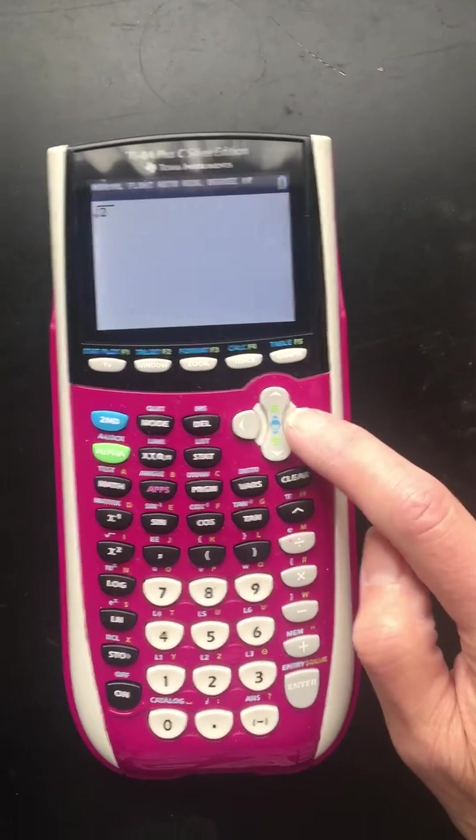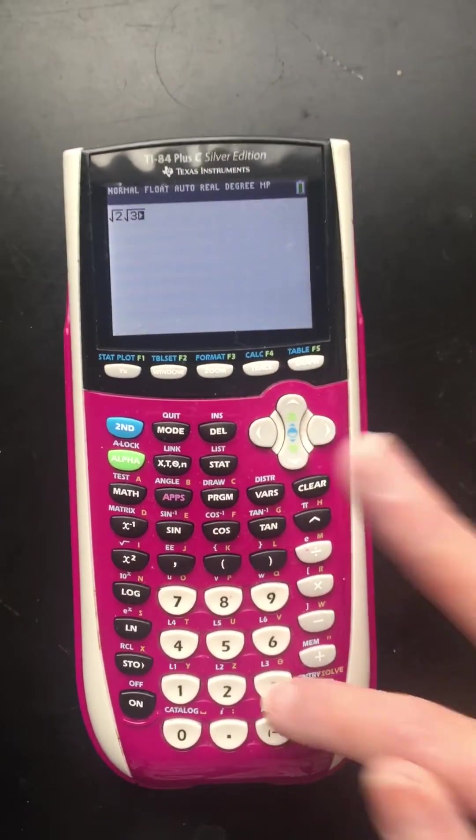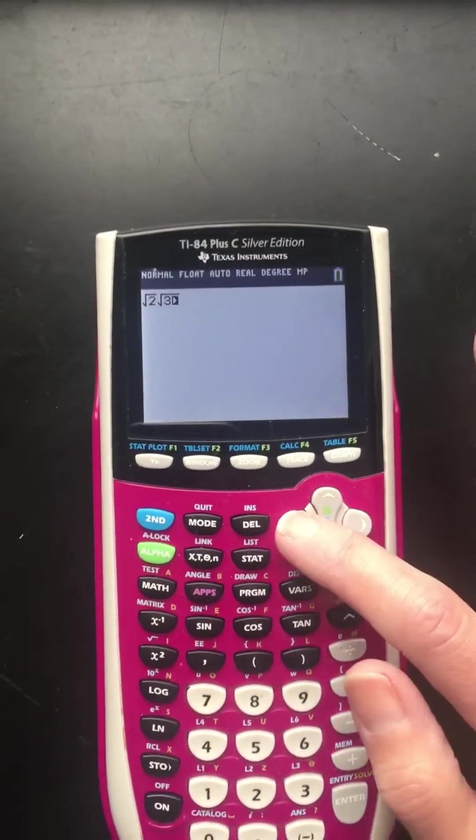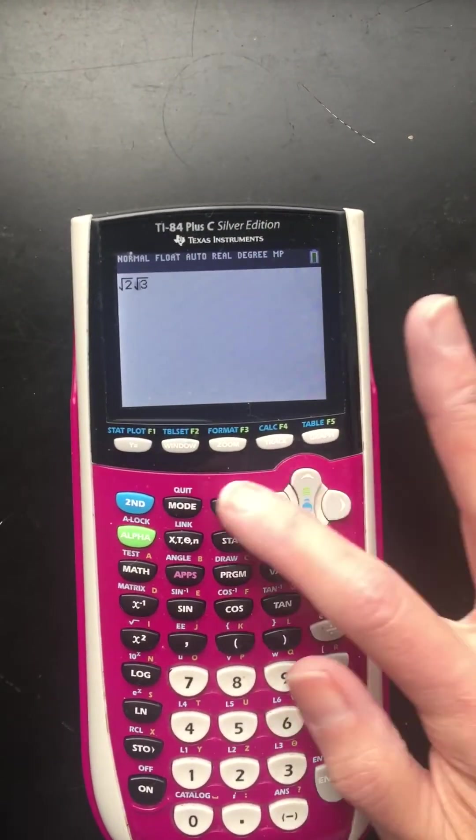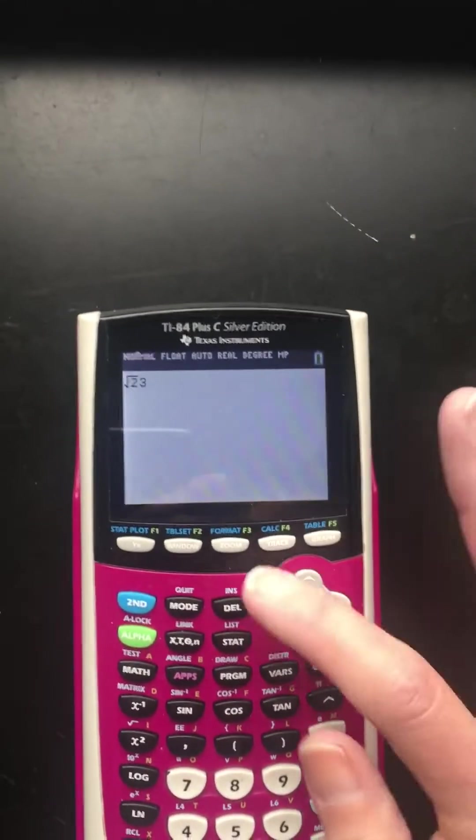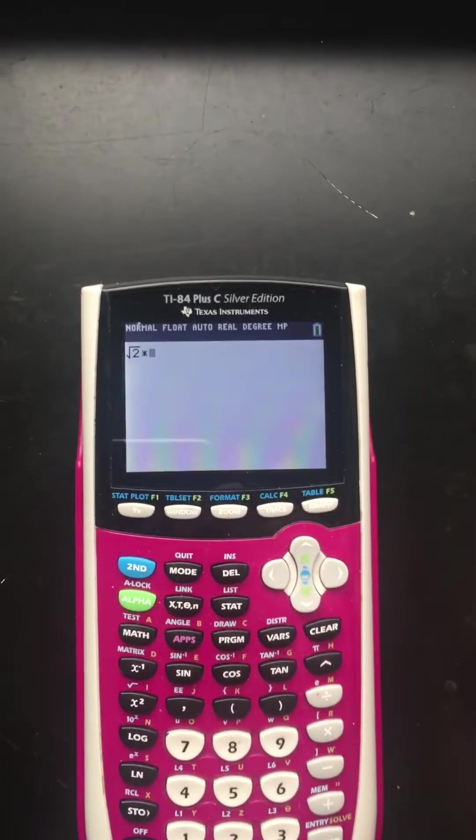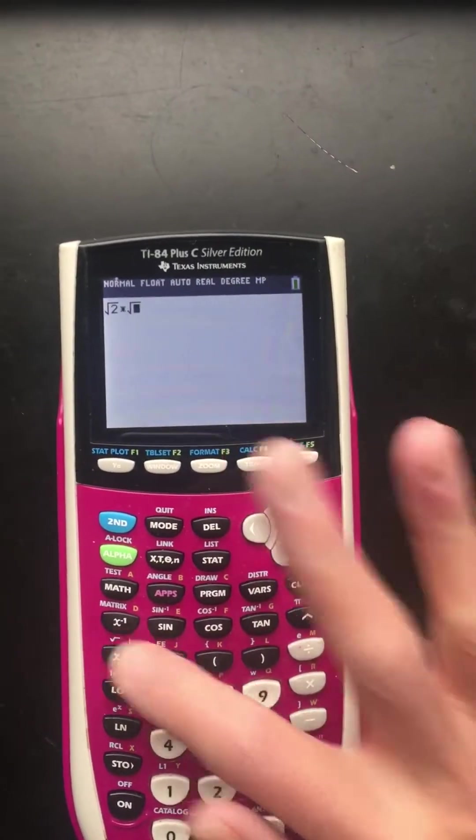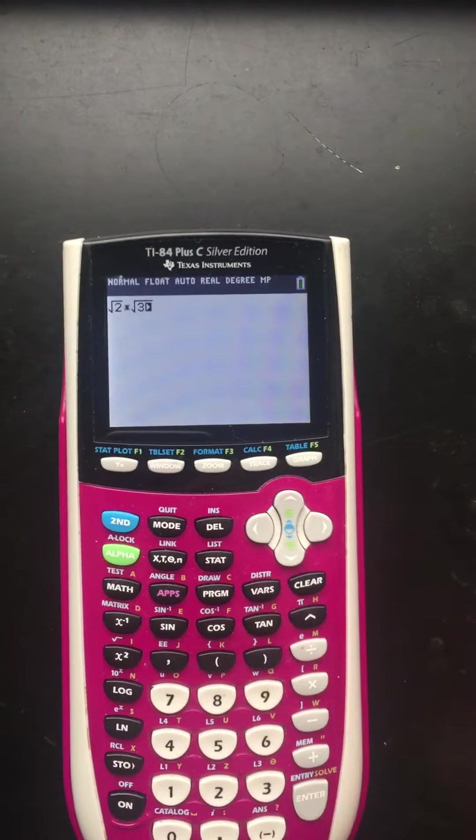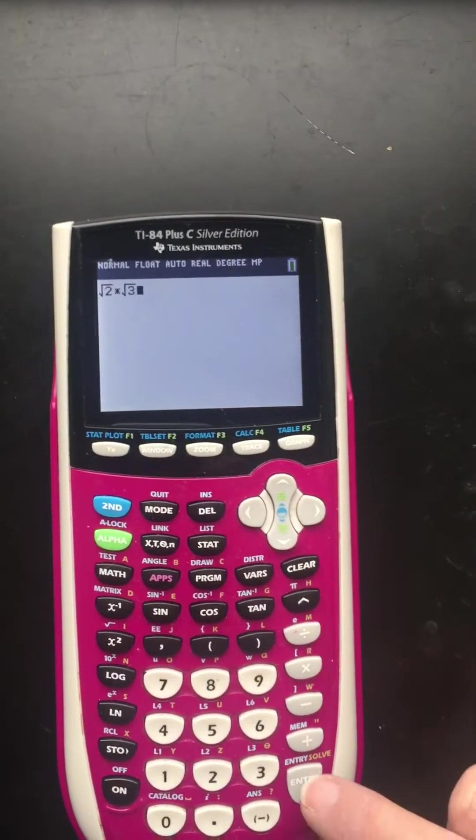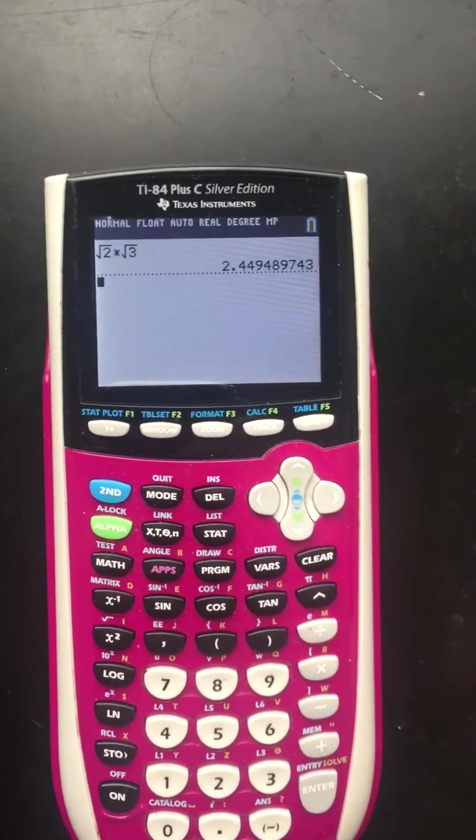Now I'm going to arrow over and do square root of 3. I wanted to, let's change that a second. Sorry about that. I want to put the times in there. So I want to do square root of 2 times square root of 3. Okay, there it is.